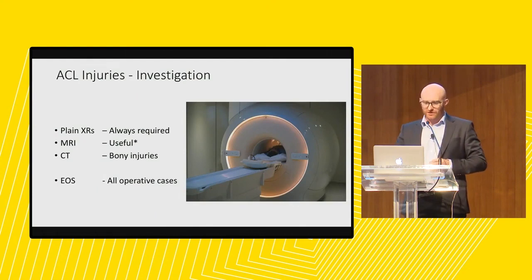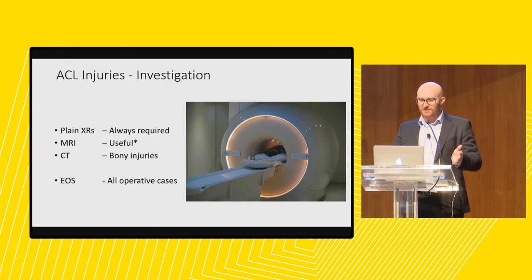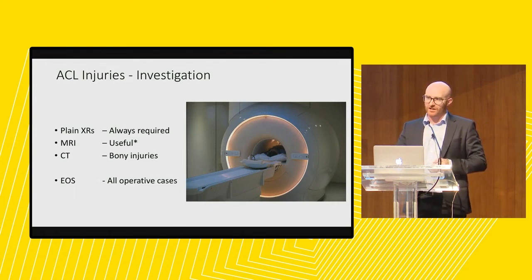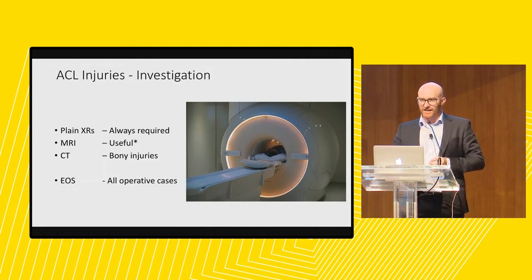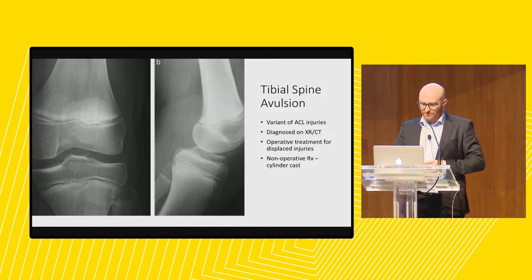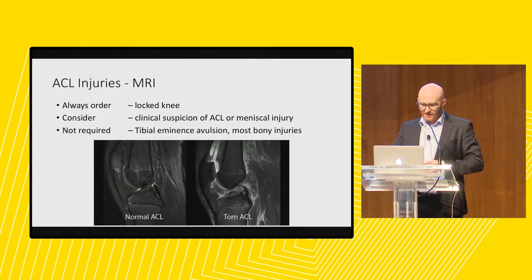In terms of investigations, every paediatric knee injury should have an x-ray if they can't weight bear or have an immediate haemarthrosis. There are lots of conditions that mimic ACLs in kids that will only show up on x-ray or CT scan and are difficult to pick on MRI. CT scans are only for bony injuries. I get an EOS scan — a standing scanogram from the waist down — for anyone going to have surgery who is skeletally immature, so we can monitor for a growth arrest. A tibial spine avulsion is a variant of ACL injuries in kids diagnosed on x-ray or CT, which is why it's important to get that before going to MRI.